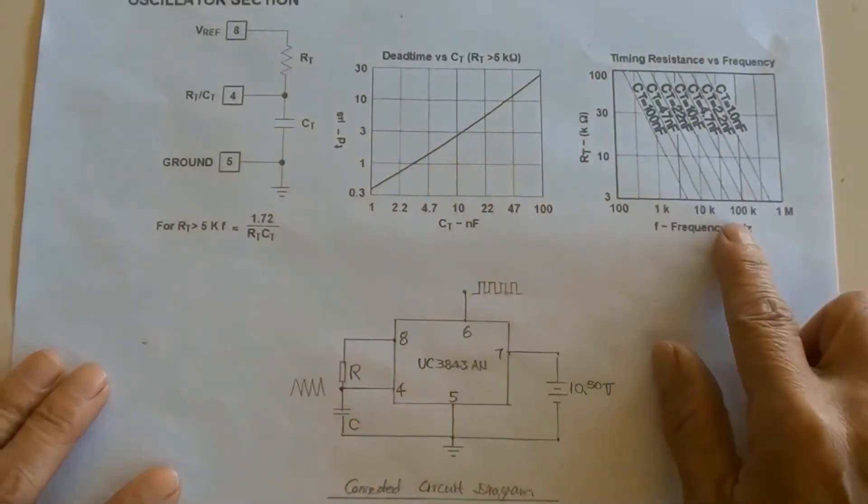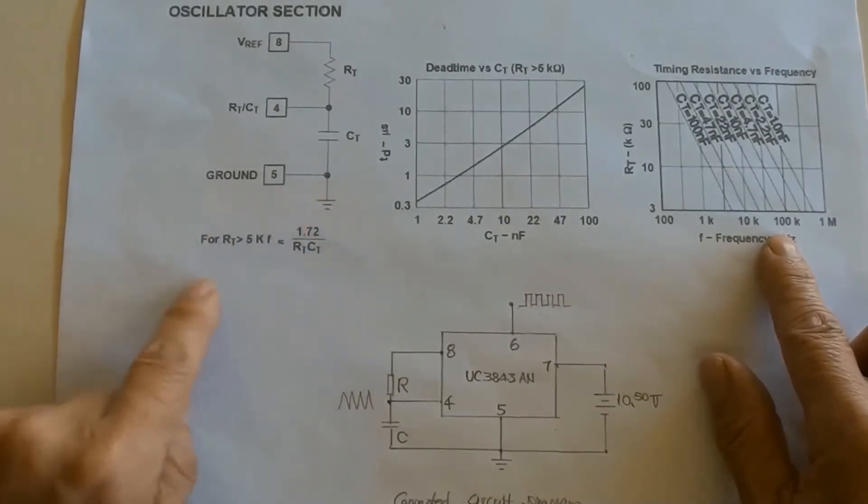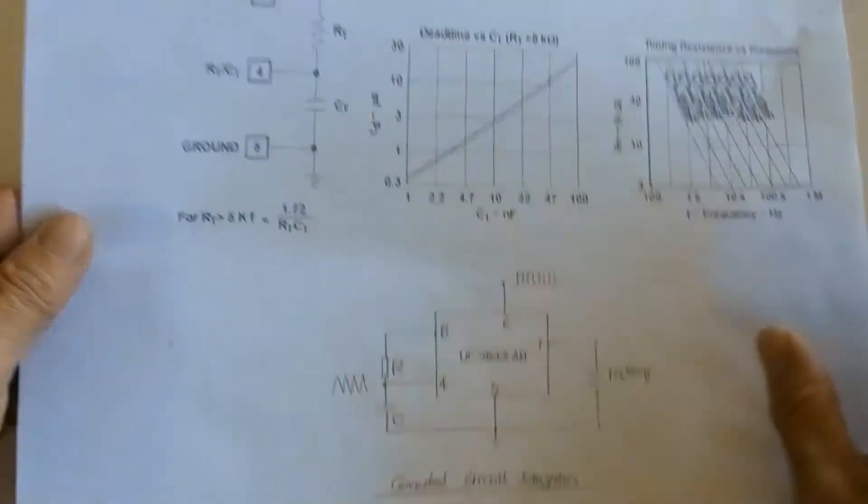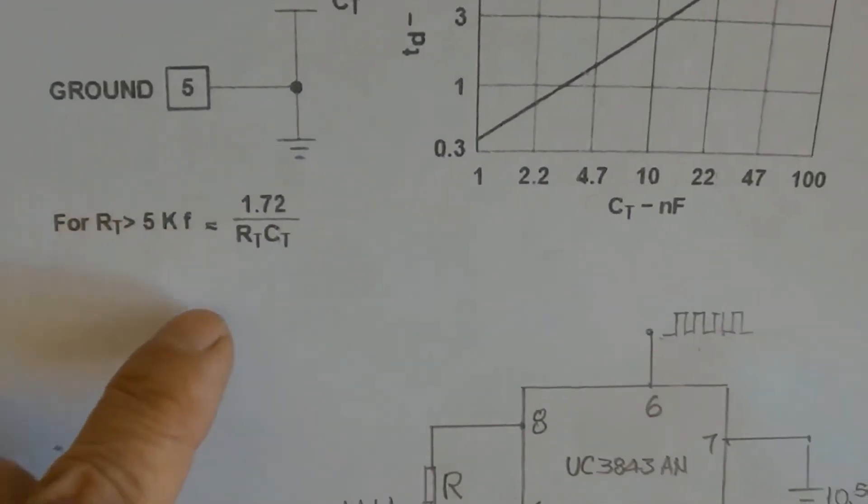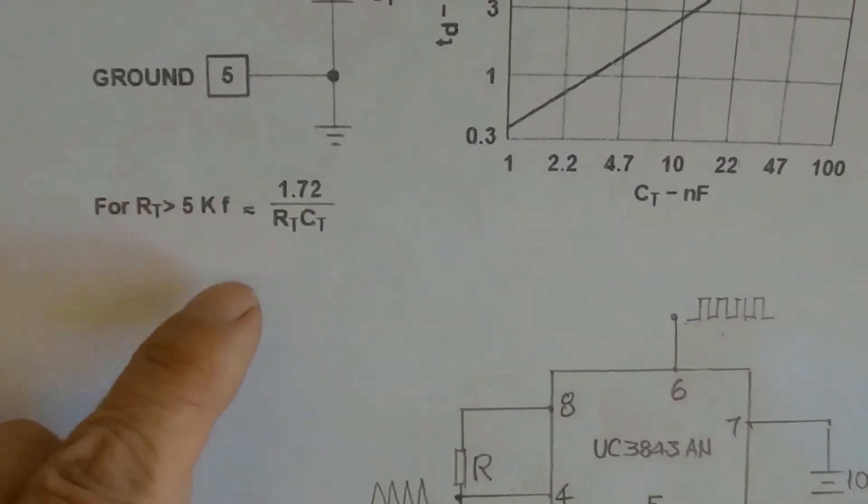By using this graphic and formula here to calculate oscillator's frequency, F equals 1.72 over R times C.